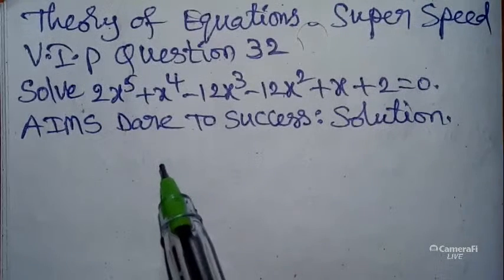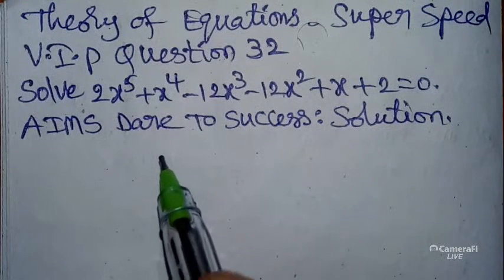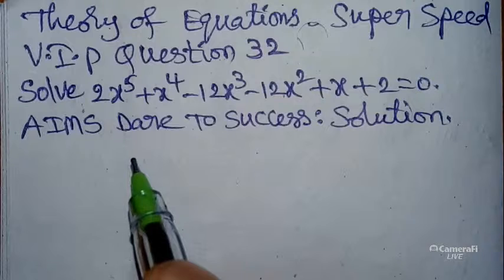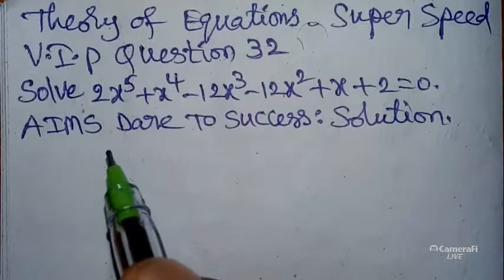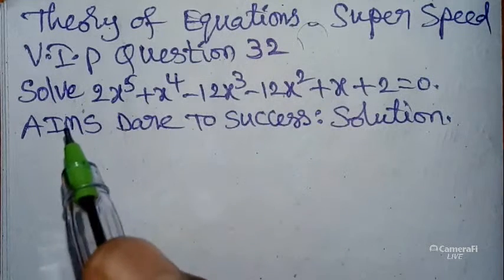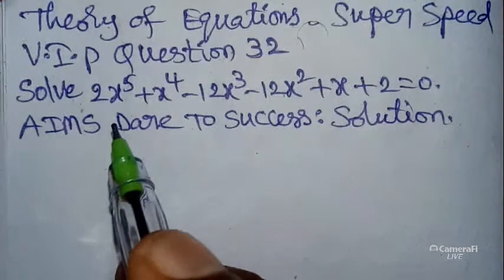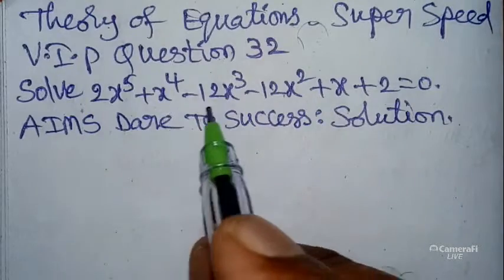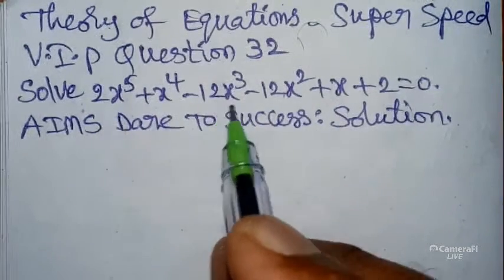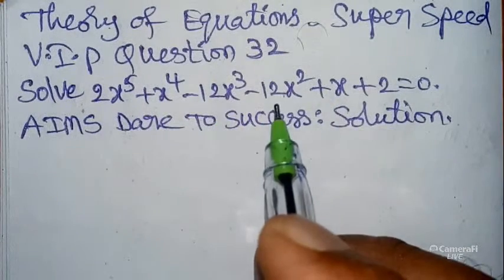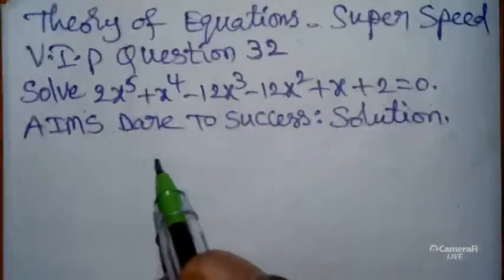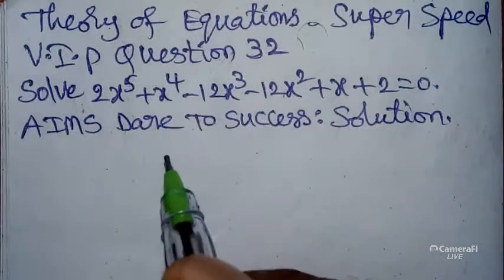Today our demanded question from the students is: solve 2x⁵ + x⁴ - 12x³ - 12x² + x + 2 = 0.